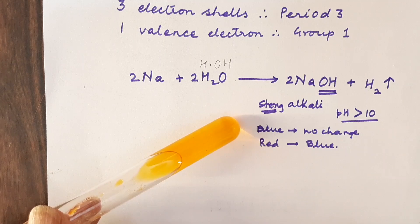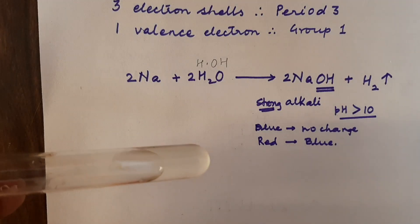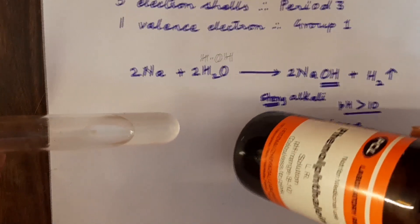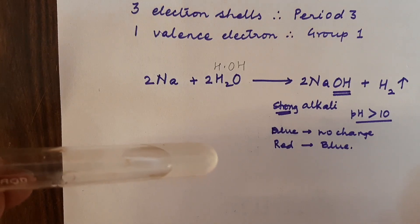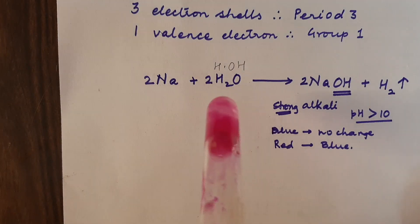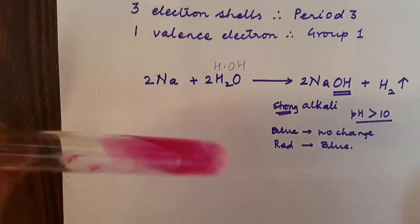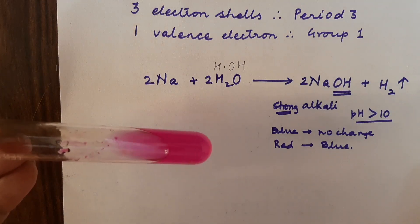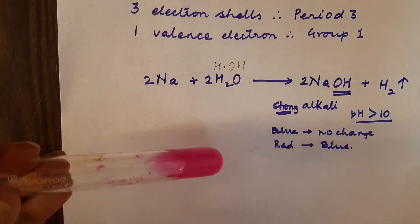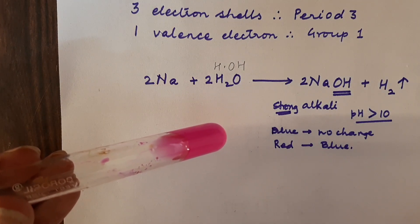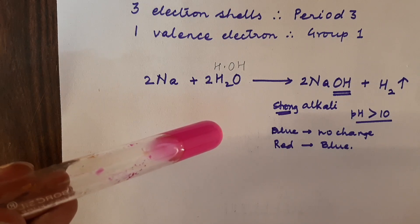Now let us try with phenolphthalein. I will take another test tube. Phenolphthalein is a colorless indicator — I am taking just a drop and adding it to the solution. See what has happened? It has turned pink. Phenolphthalein turning pink confirms the presence of hydroxyl group, and hence it is an alkali.